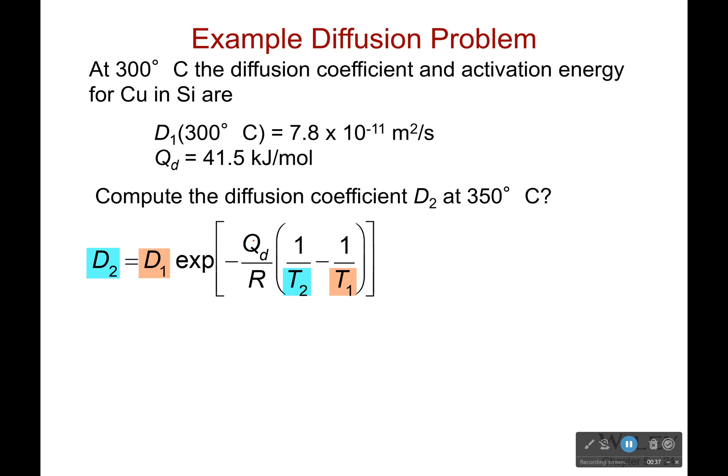Let's look at this and see if we can solve. At 300°C the diffusion coefficient and activation energy for Cu in Si are D₁(300°C) = 7.8 × 10⁻¹¹ m²/s and Qd = 41.5 kJ/mol. Compute the diffusion coefficient D₂ at 350°C.